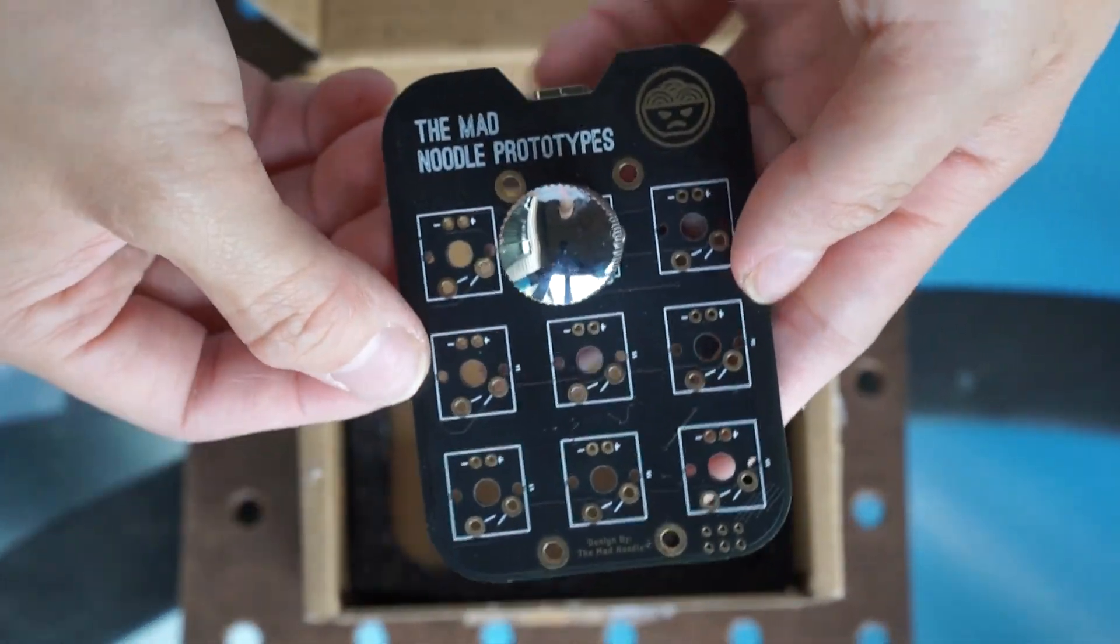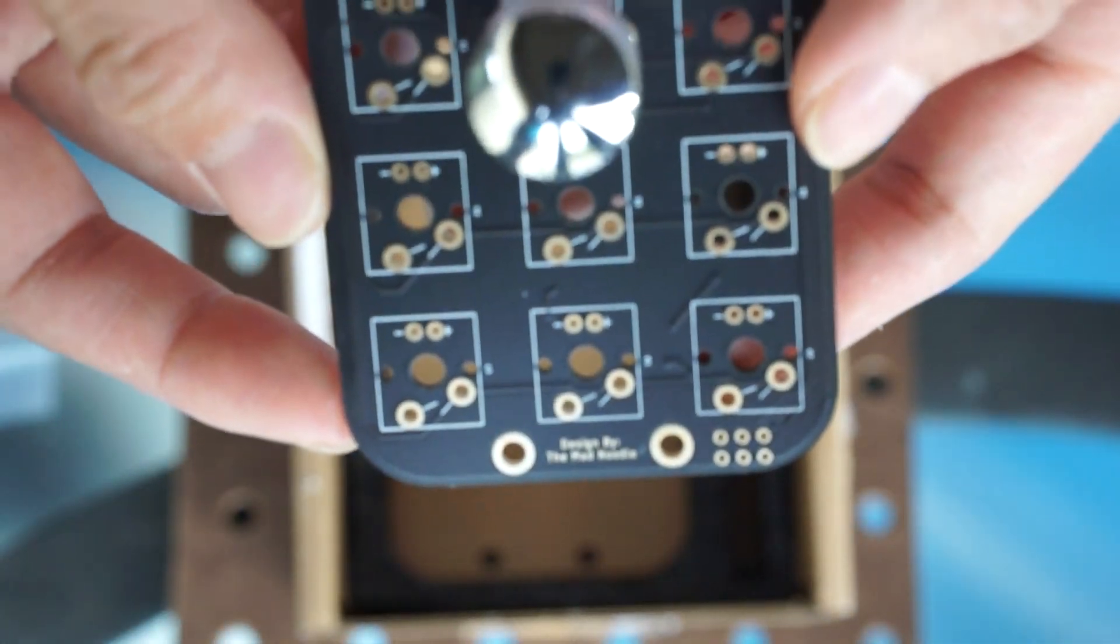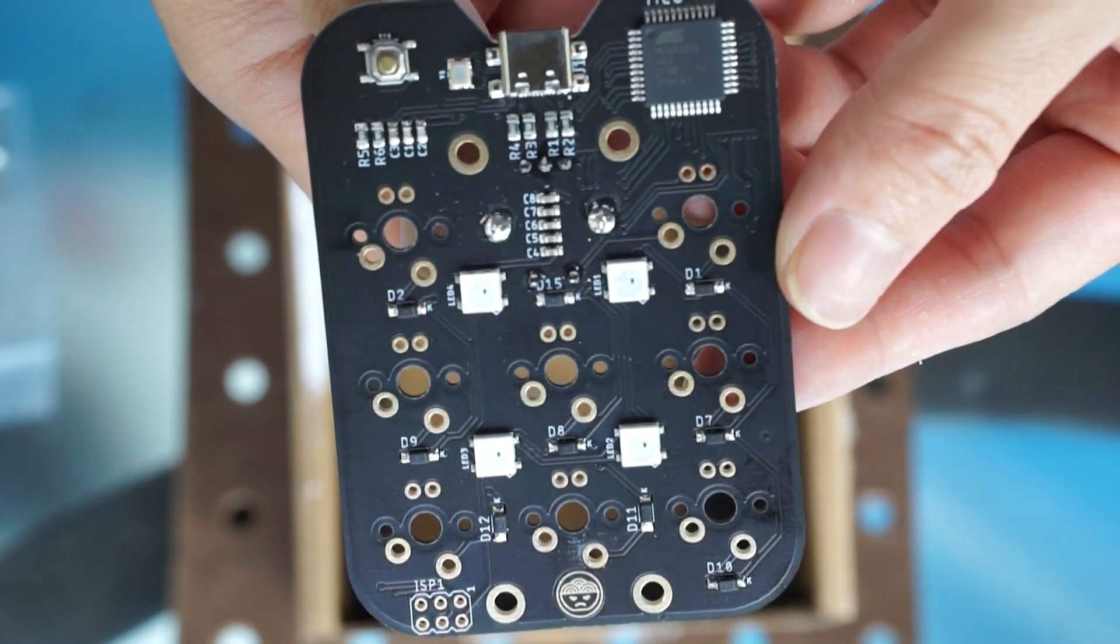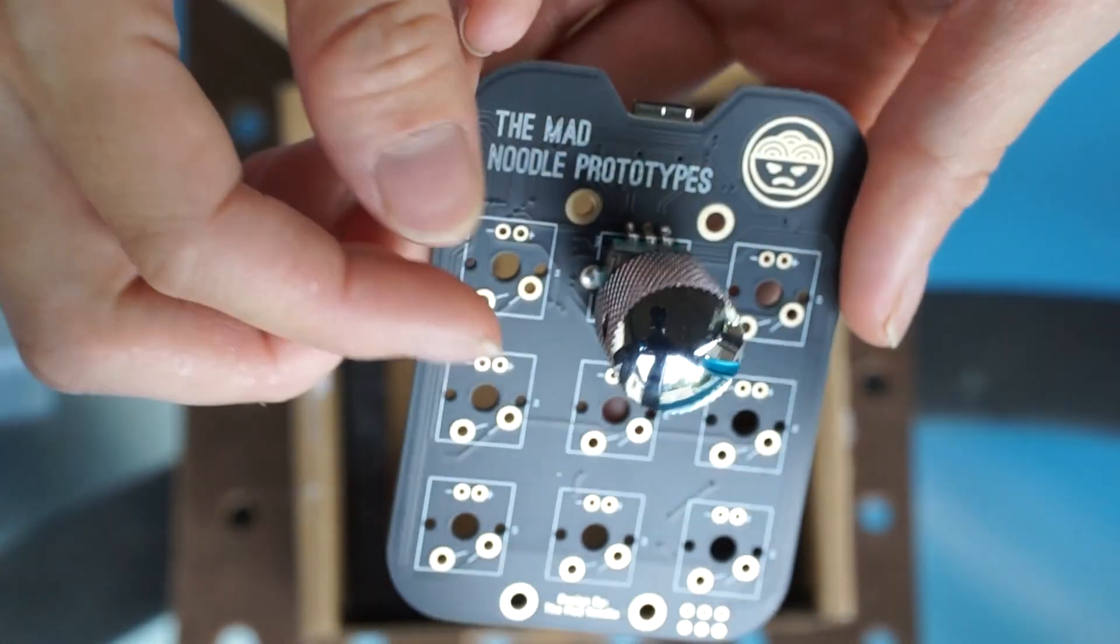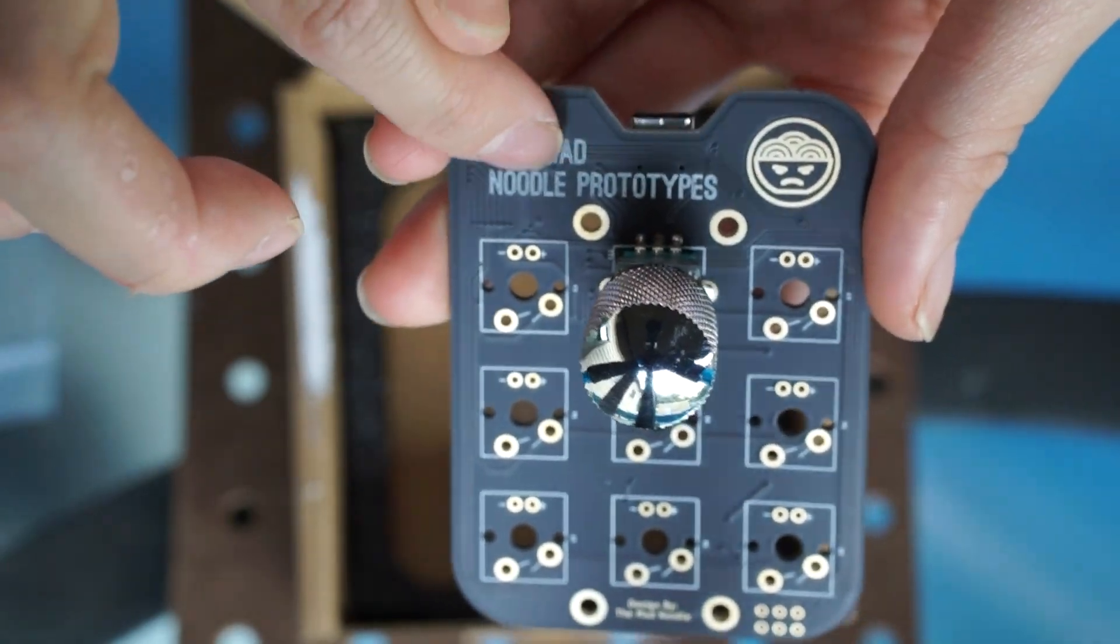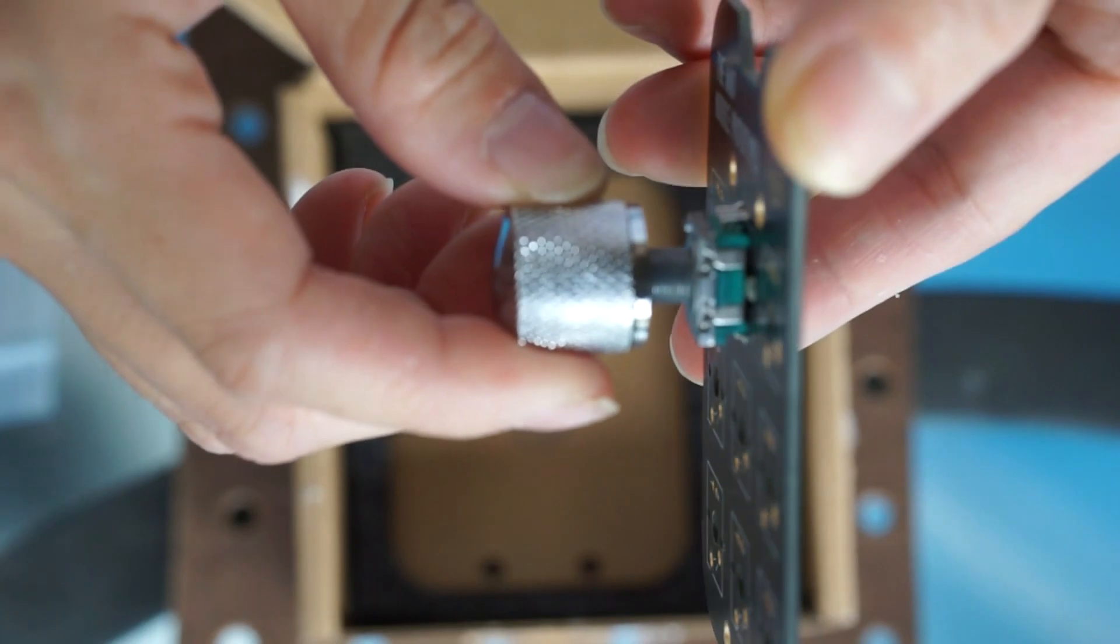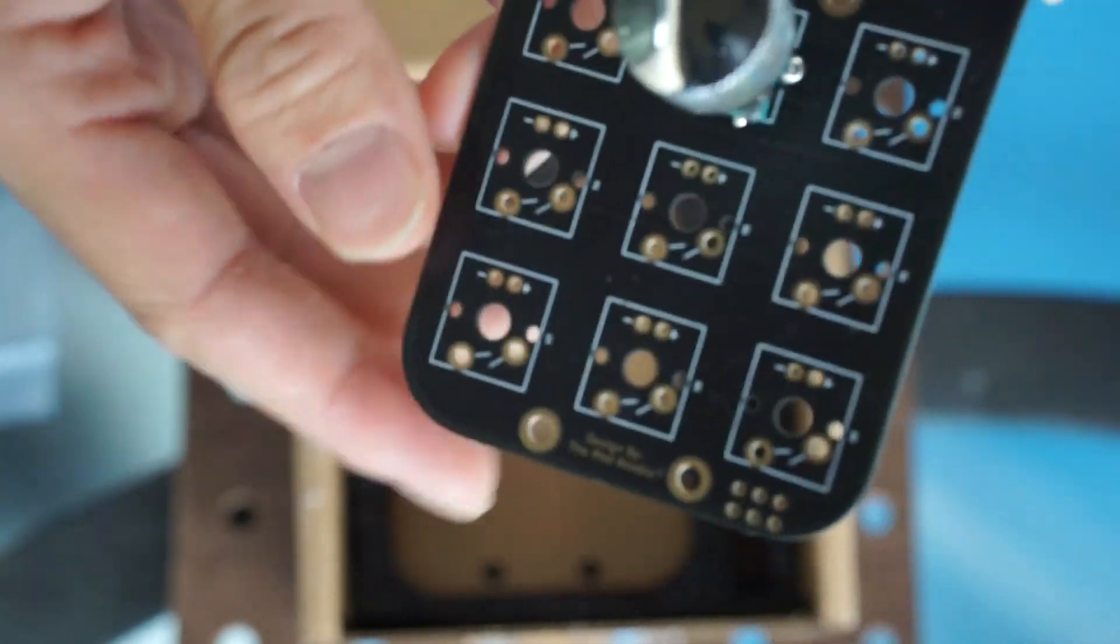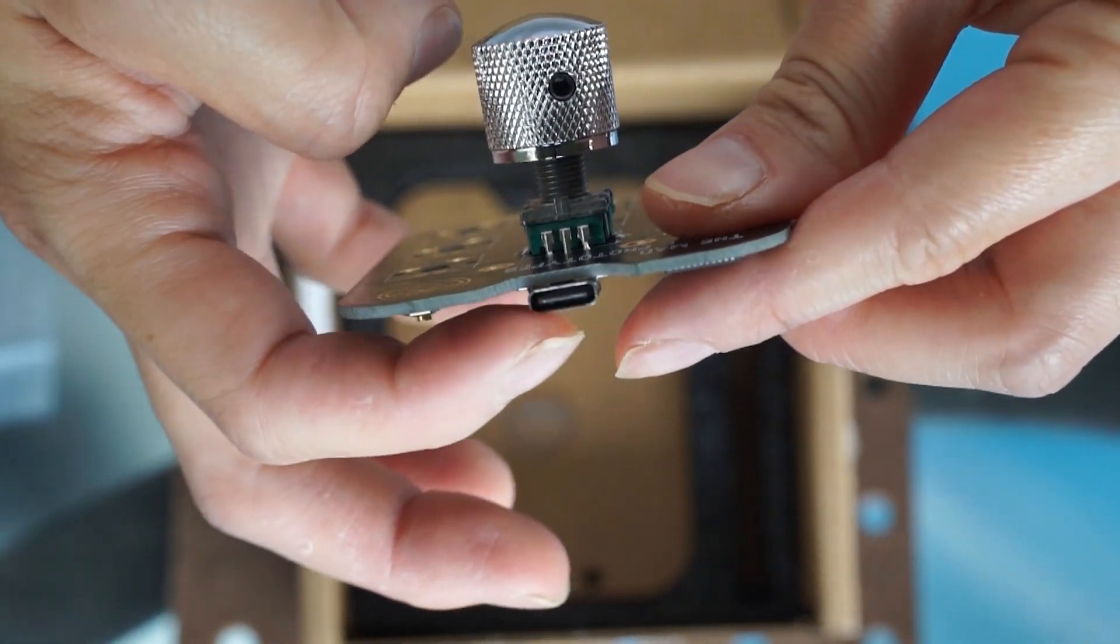So a macro pad is kind of like a shortcut keyboard. You see the squares, you can have up to eight keys and there is an encoder knob, very high quality. I got the color in black and has a cute Mad Noodle logo, and you can program this to do anything you want. There's a high quality encoder tab here, which is used for like volume. You can push it and this uses USB-C connection.